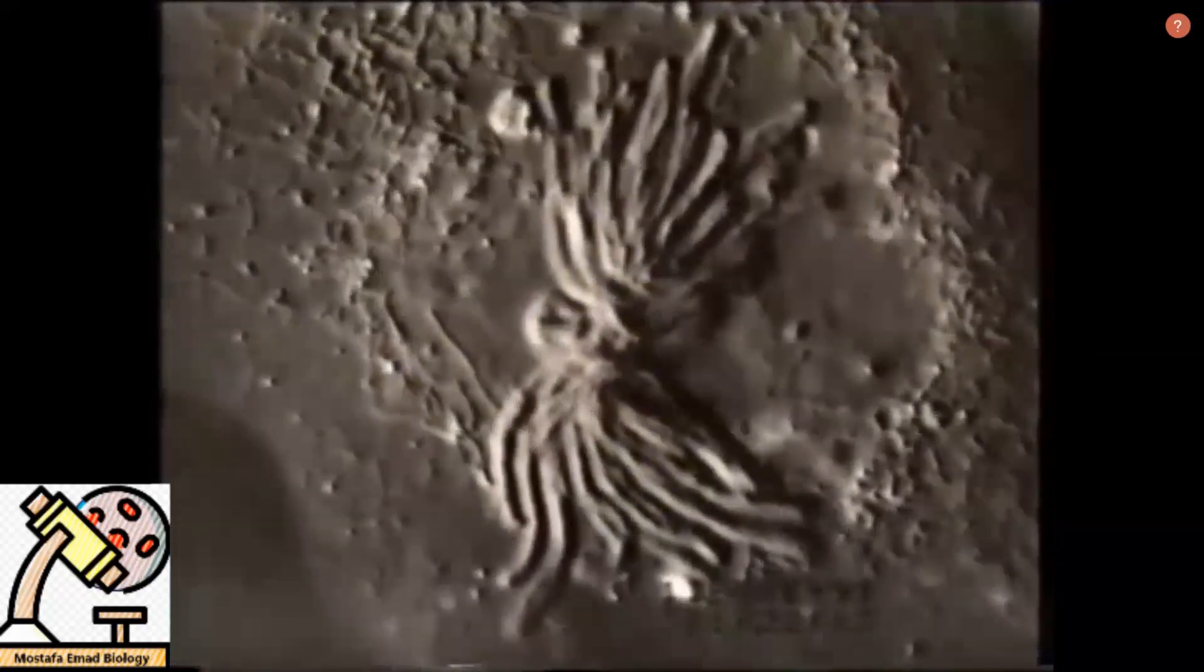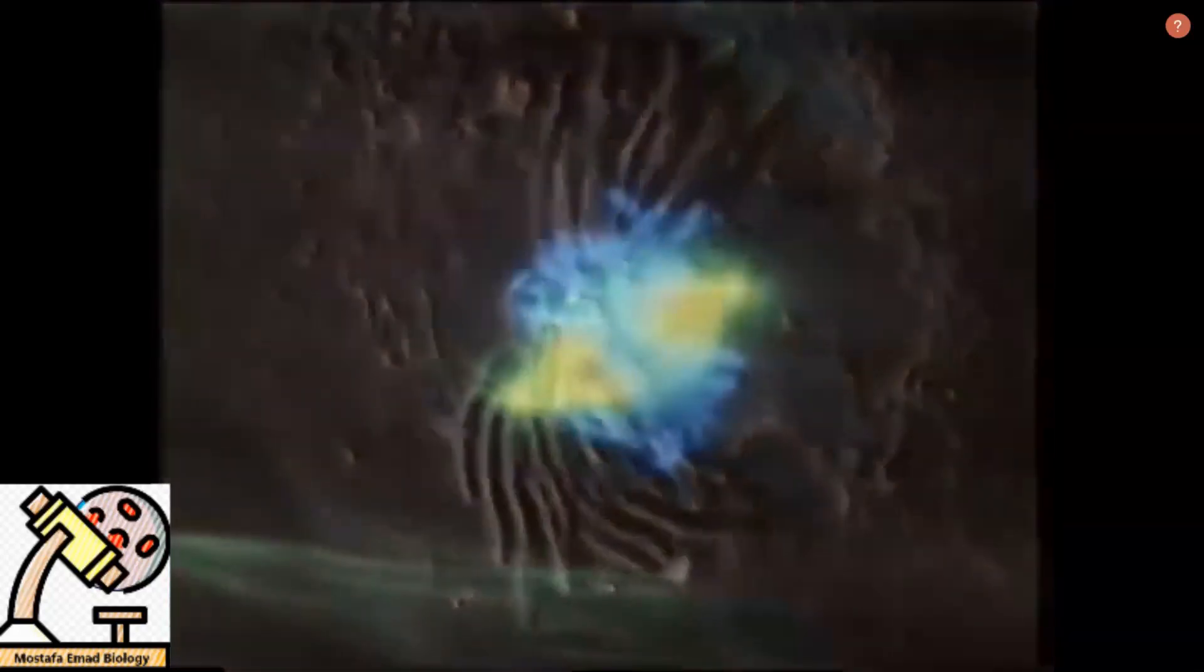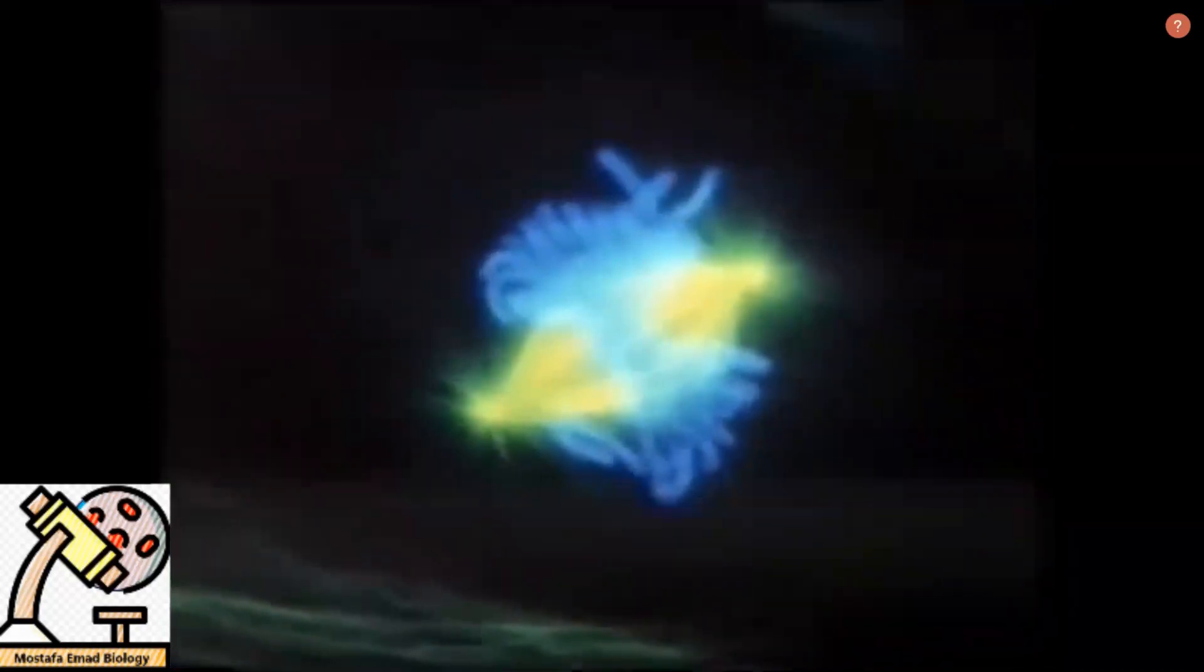In the second stage, metaphase, the paired chromosomes, or chromatids, line up near the middle of the new cell, ready to divide. Each of the new cells will have the same number of chromosomes in its nucleus.